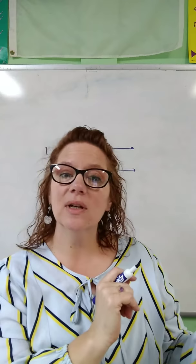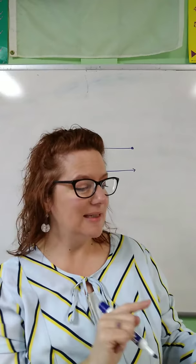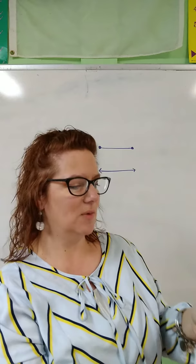Number five says parallel lines — these are lines that go beside each other but never get closer and never cross. Can you see what letter shows lines like that? Letter E — that's right, letter E is showing parallel lines. And number six says intersecting lines. I see two letters showing lines that cross each other: letter F and letter D are showing lines that cross right here and right here. Write those letters in the box.